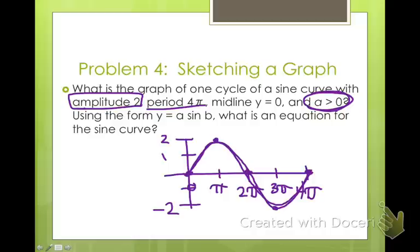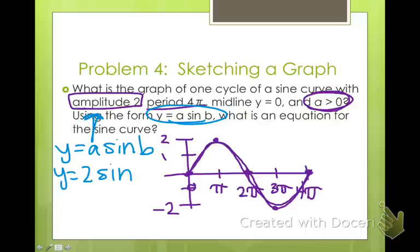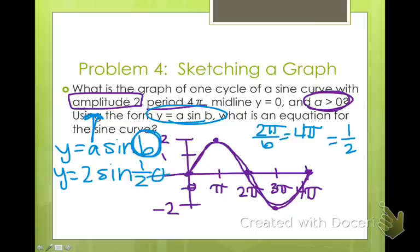Now we need to write an equation for this. So I'm going to use this as my equation, y equals a sine of b. Now I know my a value is the same as my amplitude. So y equals 2 sine of. Now I need to be able to find out what b is. Well, 2 pi over b represents my period. So that equals 4 pi. So I need to find what value of b would make this to be true. b would have to be 1 half in order to make that be true. So this becomes 1 half theta. So y equals 2 sine 1 half theta.